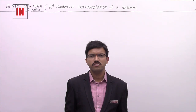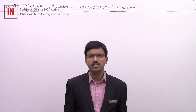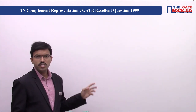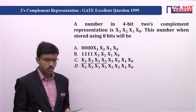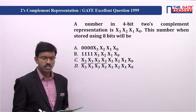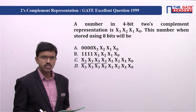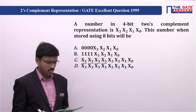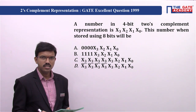Let us discuss a question related to two's complement representation of a number from the chapter on number systems and codes in digital circuits. This is an excellent question asked in GATE 1999 in the instrumentation branch. A number in four-bit two's complement representation is x3 x2 x1 x0. When stored using 8 bits, the options are: (a) four zeros then x3 x2 x1 x0, (b) four ones then x3 x2 x1 x0, (c) four times x3 then x3 x2 x1 x0, (d) four times x3-bar then x3 x2 x1 x0.